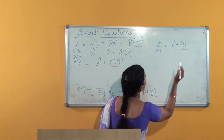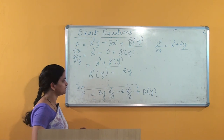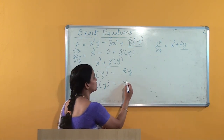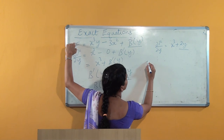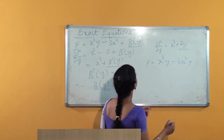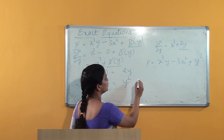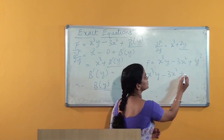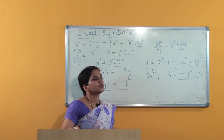In the place of b'(y) we have 2y. So b'(y) = 2y. Integrating, we get b(y) = 2·(y²/2) = y². So b(y) = y². Substituting back, f = x³y - 3x² + b(y) = x³y - 3x² + y². So the required solution is f = c, which gives x³y - 3x² + y² = c, where c is an arbitrary constant. This is the solution for the given differential equation.